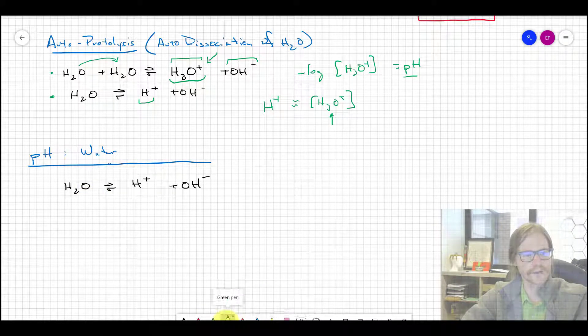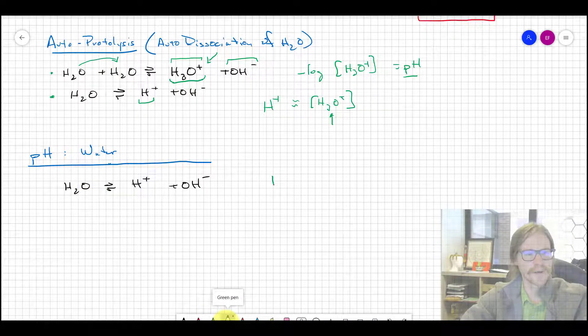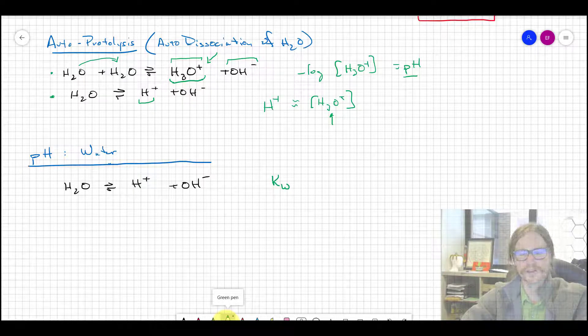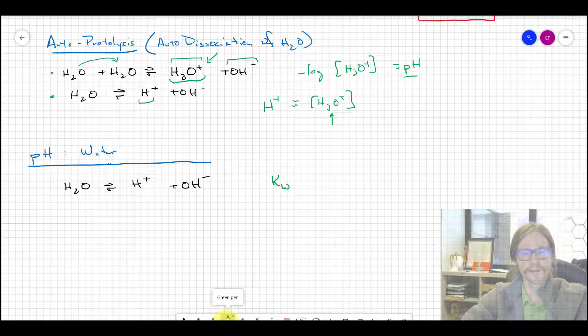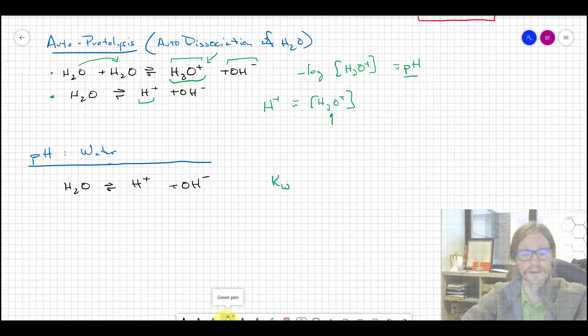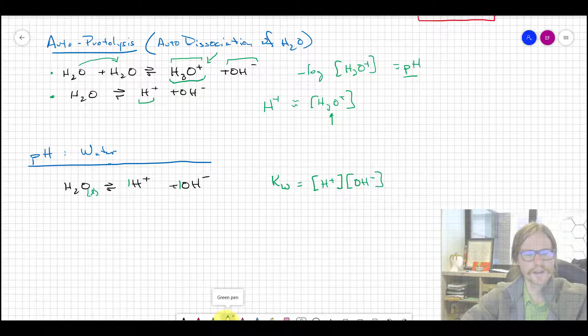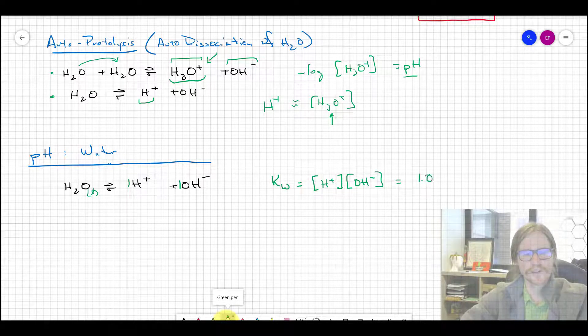Every reaction has an equilibrium constant. You are hopefully really familiar with the equilibrium constant for the autodissociation of water - we give that a special name called Kw, but it's no different in that it's still the product of the concentration of the products divided by the product of the concentration of reactants raised to their respective coefficients. Since these are all one and water is a pure liquid, the equilibrium constant Kw is just the concentration of H+ times the concentration of OH-, which at 25 degrees C equals 1.0 × 10^-14.